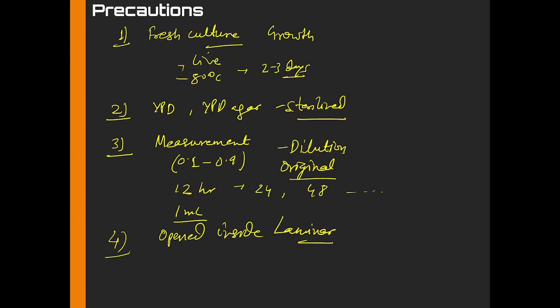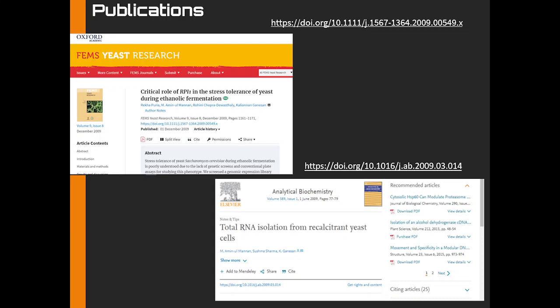Just for your knowledge purpose, if you are interested, you can visit two of my publications. This is an old publication during my PhD days: Critical Role of RPI1 in Stress Tolerance of Yeast and Ethanolic Fermentation, and another is Total RNA from Recalcitrant Yeast Cells. In this paper, for this experiment that is the growth curve, you can see how the cells were grown. With this I will end here. Thank you very much, have a nice day and stay safe in this COVID-19 situation. If you like my video and need updated videos, please subscribe to my channel. Thank you very much.